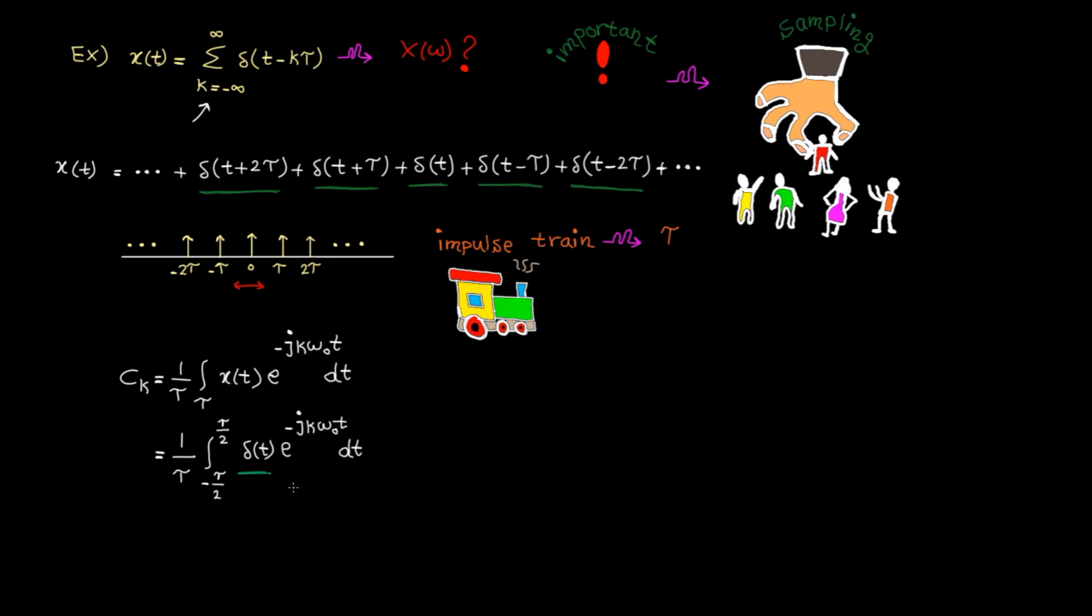As we have a delta function here, we can use the sifting property, which I already covered in the elementary signals lecture. As delta is just non-zero at the origin, we just need to replace t by 0. Exponential power 0 is 1. So the integral itself is simply 1, and ck becomes 1 over T.